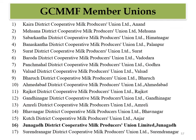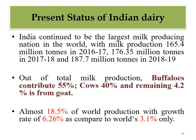The list of district-level or second-tier dairy cooperatives includes Kheda, Mehsana, Sabarkantha, Surat, Baroda, Panchmahal, Valsad, Bharuch, Ahmedabad, Rajkot, Gandhinagar, and others.